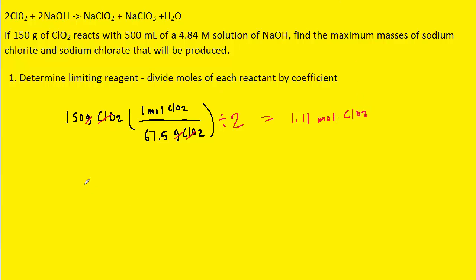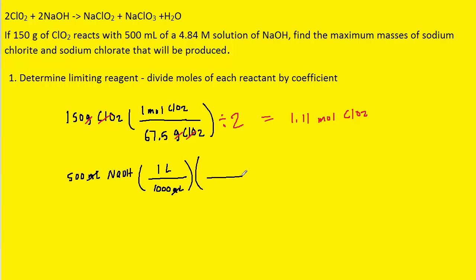Now we're going to do a similar process for the other reactant, sodium hydroxide. Here we're starting out with 500 milliliters of sodium hydroxide. We know that one liter is equal to 1,000 milliliters, and that's going to cancel out the milliliters. We also know from the molarity that there are 4.84 moles of sodium hydroxide in one liter, which cancels out the liters, leaving us with moles.